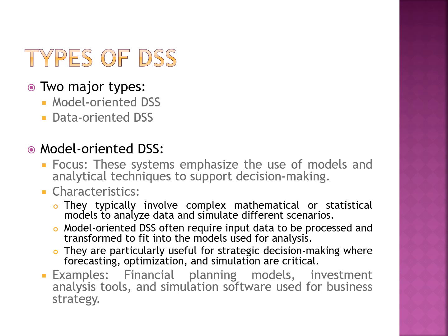Next let us discuss types of DSS. We have two types of decision support system. The first is model-oriented decision support system and the second is data-oriented decision support system. The model-oriented decision support system is created using AI techniques, machine learning, or deep learning. We create this system as a complex mathematical or statistical model to analyze data and evaluate different scenarios to understand patterns present in the data.